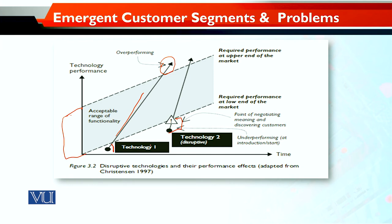Yahan pe ek bada important mode hai jisme aap dekhte hain ke mera segment kaun sa hoga jo is technology application ko adopt karega — kyunki jo zyada-tar log hain woh ise pasand nahi karenge shuru mein, kyunki yeh unki expectation se kam hai. Yeh ek bada negotiating time hai jisme aapki technology under-perform kar rahi hai at introduction and starting level. Is time mein aap discovering customers kar rahe hain — through iteration, ek application banate hain, phir modify karte hain, phir behtar application laate hain, phir nayi product laate hain.